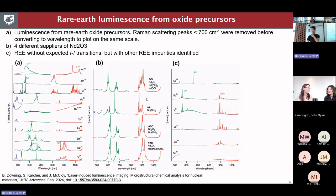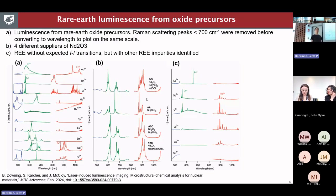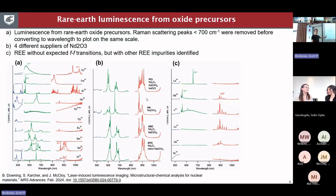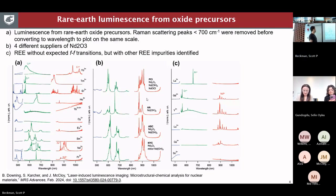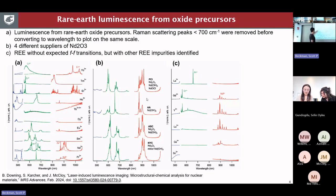This is from some previous work that we published — a compilation of a bunch of the rare earth oxides that we've had in our labs. Some of them have a dashed line where we have multiple sources from different vendors. There are three different sections. First, all of the Raman shifts are cut off, so everything below about 700 wavenumbers, and then this is shown in wavelength. Depending on the laser wavelength we're using, some elements such as cerium here, we don't see anything with the red laser, but we see some pretty strong luminescence using the green laser.